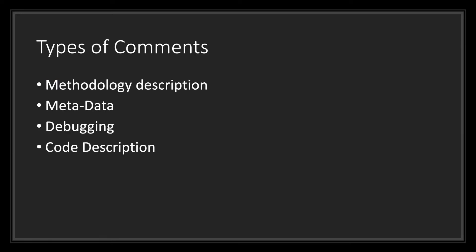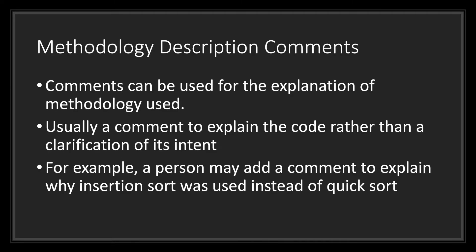There are many different types of comments, however these four types are the ones you may find yourself using most of the time: methodology description comments, metadata comments, debugging comments, and code description comments. Methodology description comments can be used for the explanation of the methodology you use in your code. You will find yourself using this type of comment to explain the code rather than a clarification of the code's intent. For example, a person may add a comment to explain why insertion sort was used instead of quicksort.